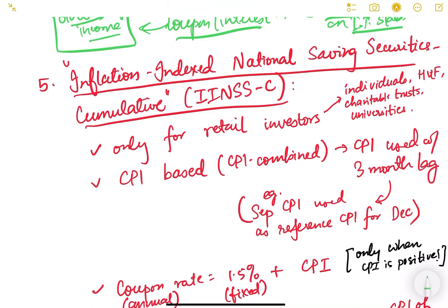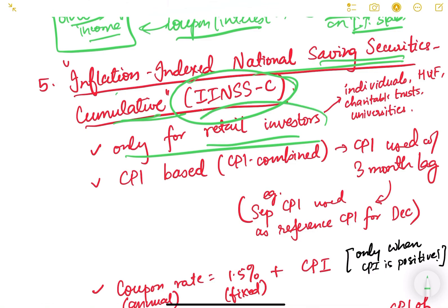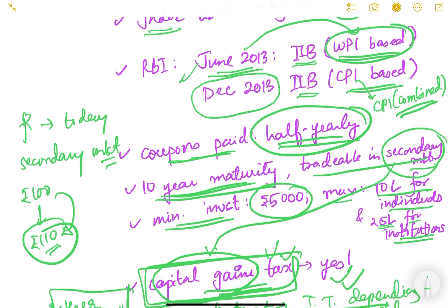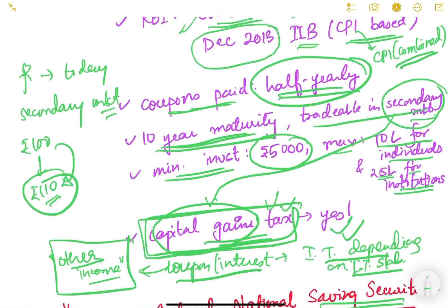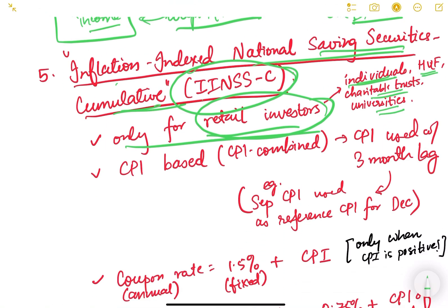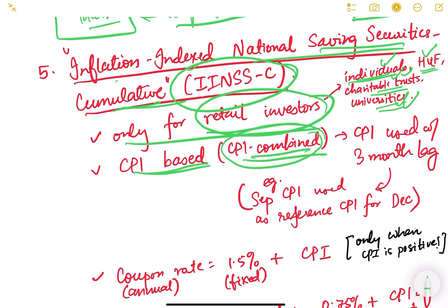RBI also introduced another type called Inflation Index National Savings Securities Cumulative bonds (IINSS-C). These are only for retail investors — individuals, Hindu Undivided Families, charitable trusts, and universities or educational institutions. They are CPI-combined-based, but the CPI is applied with a three-month lag. For example, if the bond is issued in December, the CPI of September (three months prior) is used.